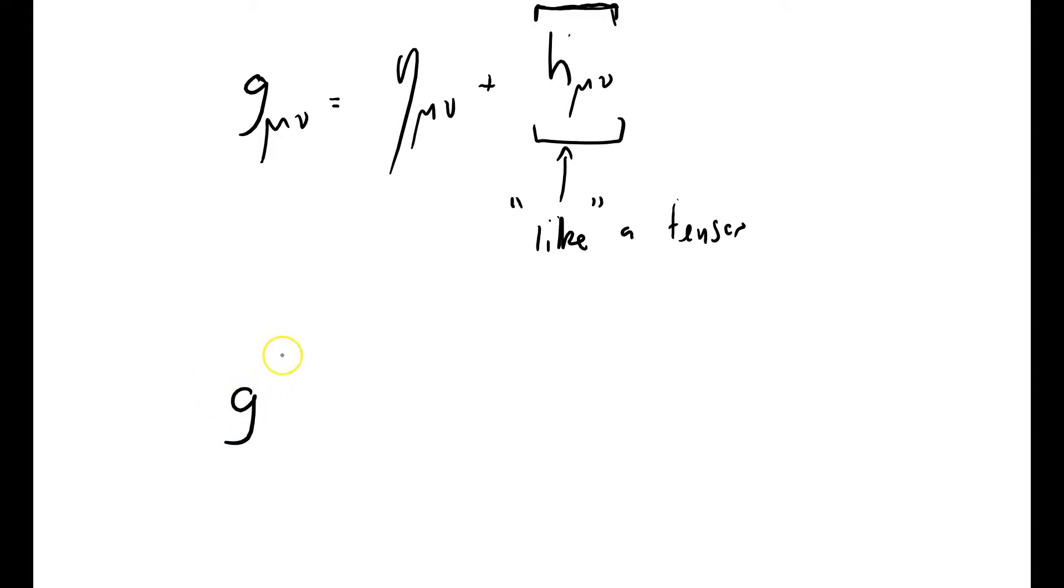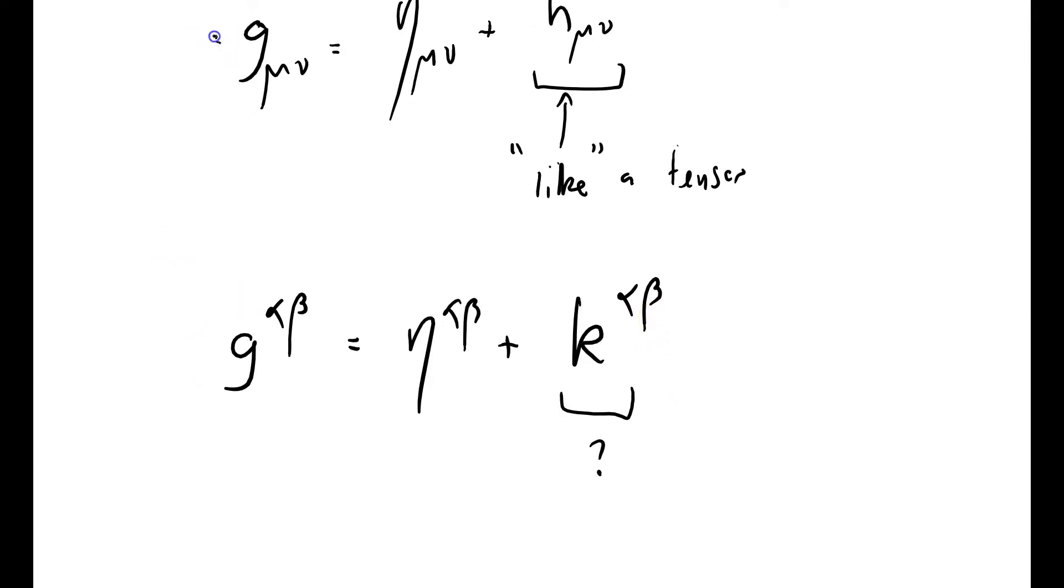Well, what I'm going to do is define G alpha beta with two upstairs indices equals the same old Minkowski matrix plus, let's call it K alpha beta, and we don't know what that is. So that's how we would raise that index. We would raise those two indices from downstairs position to the upstairs position, simply by starting with another equation like this equation, but with known components except for this thing that we don't know.